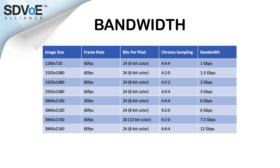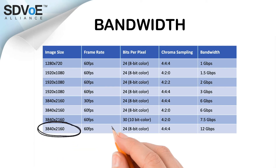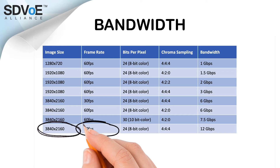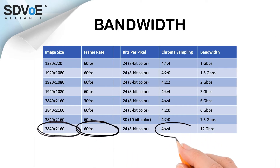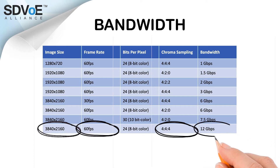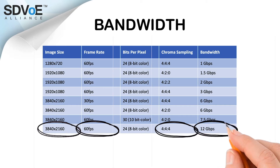In its native form, HDMI video consumes a lot of bandwidth. For example, a 4K image at 60 frames per second with a 4-4-4 sampling ratio — in other words, HDMI in its raw format — requires 12 gigabits per second of bandwidth.